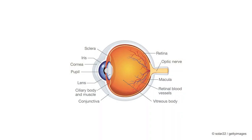That brings us to the second important topic: the human eye and the way it processes visual information from the exterior world. Without going into great detail, light passes through the pupil and lens and hits the retina, the membrane at the back of our eyeball. The retina is made of photoreceptor cells — the cones and the rods. We have two main types: rods are sensitive to light intensity, while cones are sensitive to light wavelength, which, as we've seen, corresponds to color.